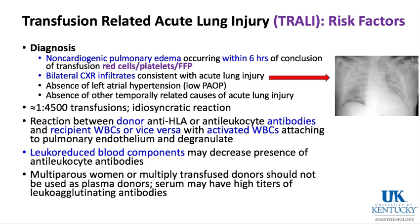The chest x-ray shows both lungs involved — a whiteout consistent with acute lung injury — within six hours of transfusion. Non-cardiogenic means this is not a problem with the left side of the heart; left atrial and wedge pressures are not high. This is a problem with leaky alveolar membranes. It occurs in about 1 out of 4,500 transfusions and is a reaction between antibodies and white blood cells, with degranulation of white blood cells on the pulmonary endothelium.